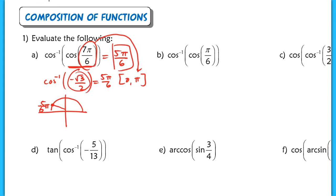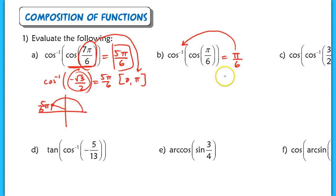In the next example, I have the inverse cosine of the cosine of π/6. In this case, it is safe to use our fundamental inverse identity to conclude that this equals π/6, because π/6 falls within the range of the inverse cosine function. So even if you do the work here, you'll end up right back with the π/6 angle measure.